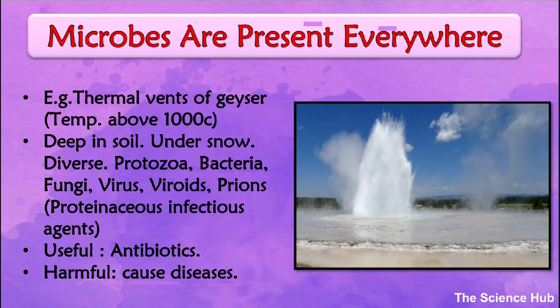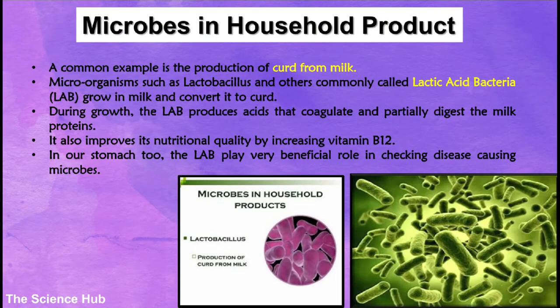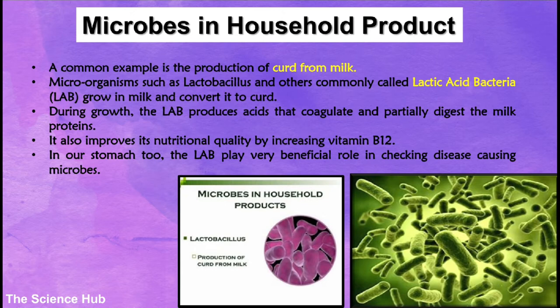Microbes are also useful in producing antibiotics. A very common example of microbes in household products is the production of curd from milk. Microorganisms such as Lactobacillus and other lactic acid bacteria (LAB) grow in milk and convert it to curd. During growth, the LAB produces acids that coagulate and partially digest the milk proteins, improving its nutritional quality by increasing vitamin B12. In our stomach too, LAB plays a very beneficial role in checking disease-causing microbes.